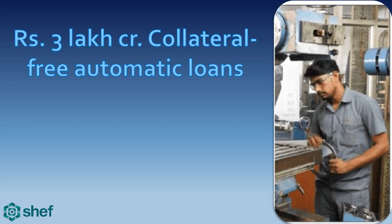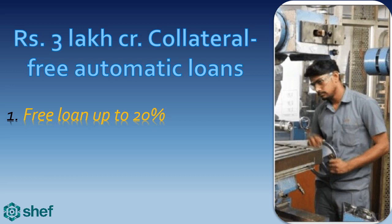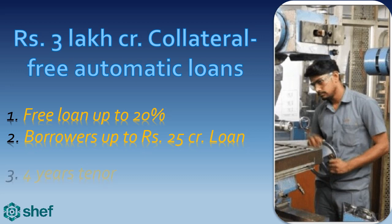The first reform is rupees 3 lakh crore collateral-free automatic loans. Because of lockdown there is a huge loss in MSMEs, due to which the enterprises who are working are now unable to run. So it is important to give some extra loan for revival. Under this scheme, banks and NBFCs will offer up to 20 percent of entire outstanding credit to MSMEs. MSMEs who have taken up to 25 crore outstanding credit and have 100 crore turnover are eligible. There is a four-year loan tenure and in the first 12 months there is no principal repayment, but interest has to be paid.